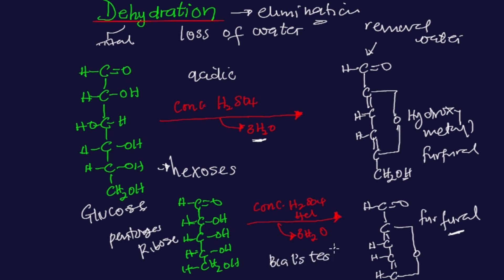This is actually the basis for Bial's test. In this case, the furfural that is produced can react with aniline to form a green-colored complex. That is what is formed as the product. Similarly, the furfural derivative formed from the dehydration of ribose sugar can also react with aniline to form a green-colored complex.